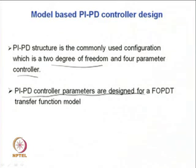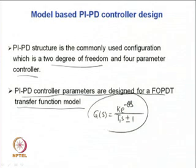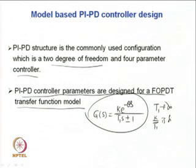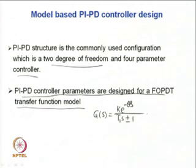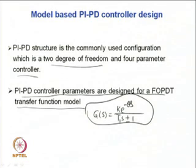PIPD controller parameters will be designed for a first order plus dead time transfer function model of the form G(s) = K·e^(−θs) / (T₁s ± 1). To find design parameters for an integrating process, limiting values for T₁ can be applied: when T₁ tends to infinity such that K/T₁ is finite, the formulae derived for the PIPD controllers will also be applicable for integrating processes.